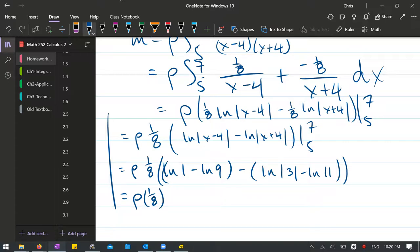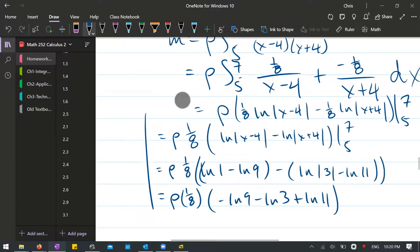I don't think it's going to get any better than this. ln 1 is 0, that's nice. So you're negative ln 9 minus ln 3 plus ln 11.